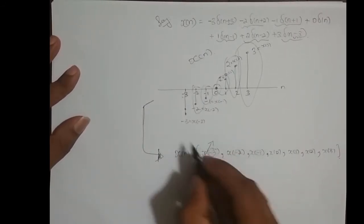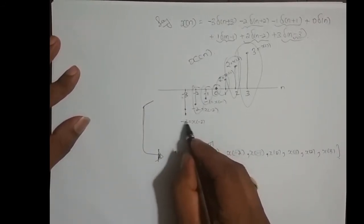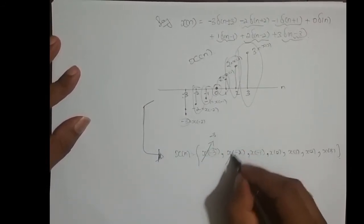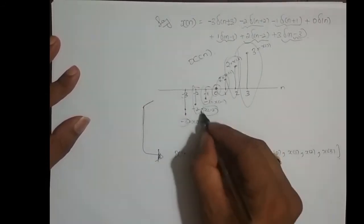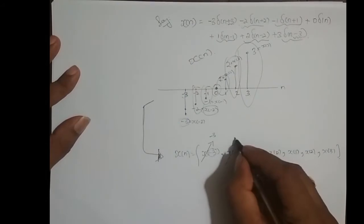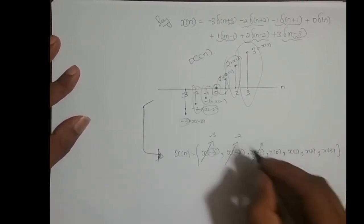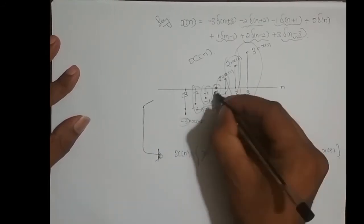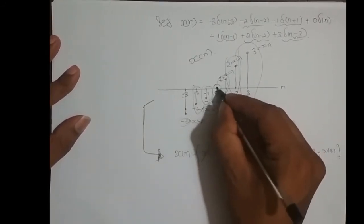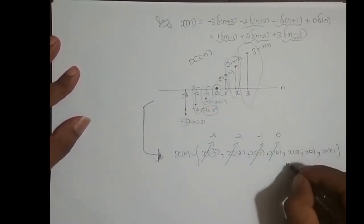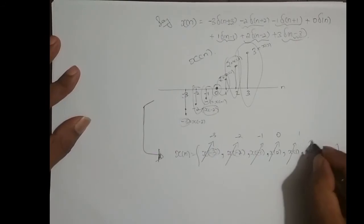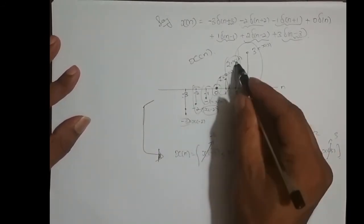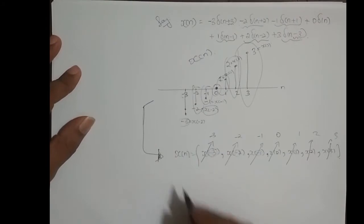What is x(-3)? The amplitude of x(-3) is minus 3. The amplitude of x(-2) is minus 2. The amplitude of x(-1) is minus 1. The amplitude of x(0) — there is no amplitude at x(0), so it is 0. Similarly x(1) is 1, x(2) is 2, and x(3) is 3.